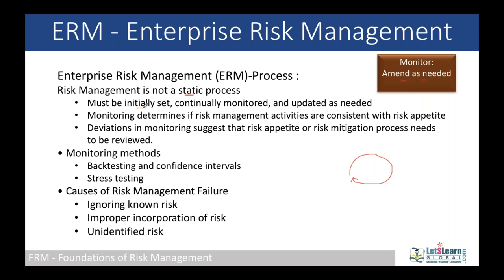Once initially set and continually monitored, we will come to know whether the controls are effective or ineffective. Ineffective ones are discarded; effective ones continue. New controls that are needed are recommended to management, and they are to be updated as needed. Monitoring also determines if risk management activities are consistent with the risk appetite or not — if they are not consistent, they are to be discarded, otherwise they will simply be costlier. From time to time, when we review it, we come to know whether the risk appetite framework is enough or whether we need to further increase or reduce the risk acceptance.